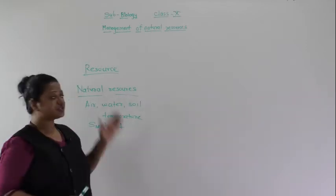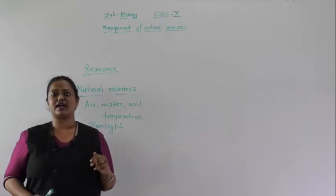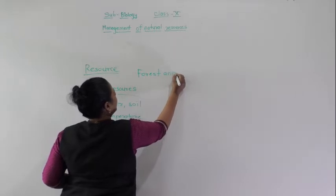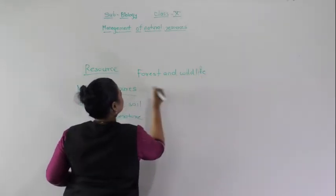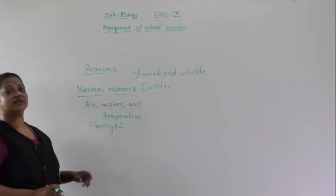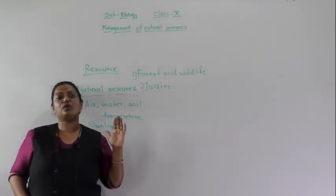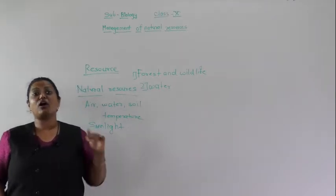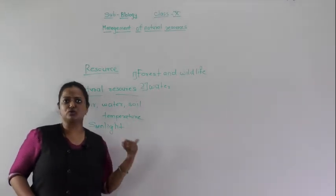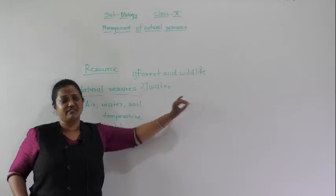In the topic of management of natural resources, we are going to focus on two major natural resources: forest and wildlife, and water. Other resources are important, but in earlier classes we have already studied them in detail, along with cycles like the oxygen cycle and carbon cycle. Here in Class 10, we are going to focus specifically on forest and wildlife and water.